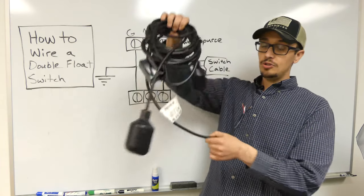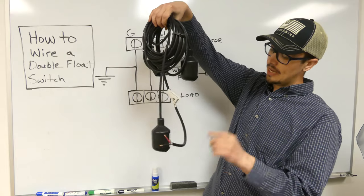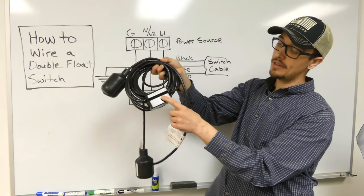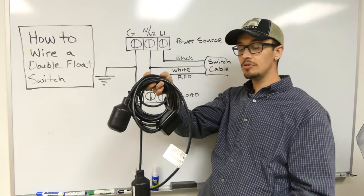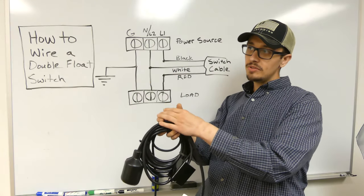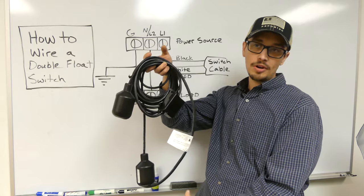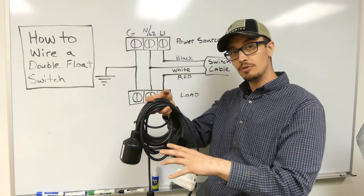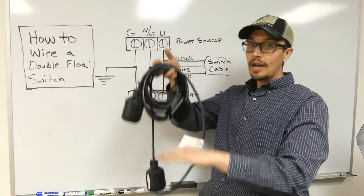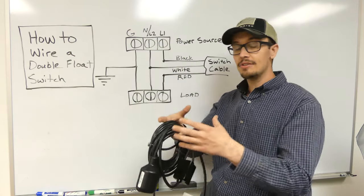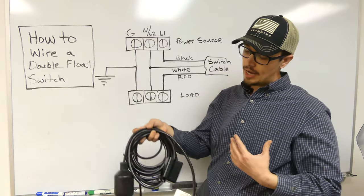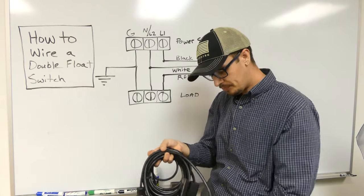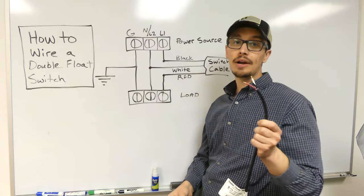So if you're not familiar with a double float switch, we essentially have two floats in here and this one is labeled the bottom, this one is labeled the top. We've got a relay here. So what we're able to do is in relatively deep applications where you maybe don't have a lot of room for a wide angle swing, you can use the double float switch for a wider range of pumping in those tighter diameter applications. And it's also intended for direct pump control.